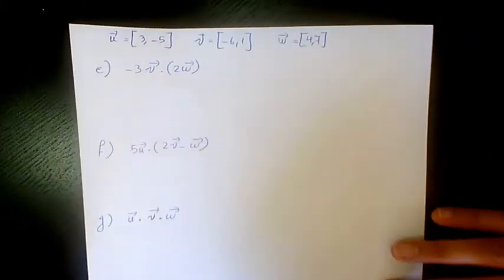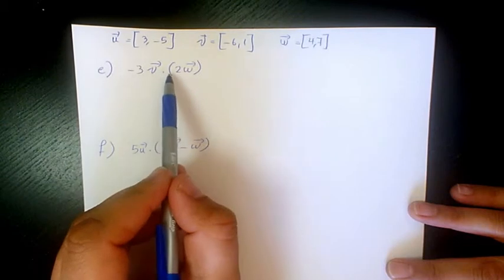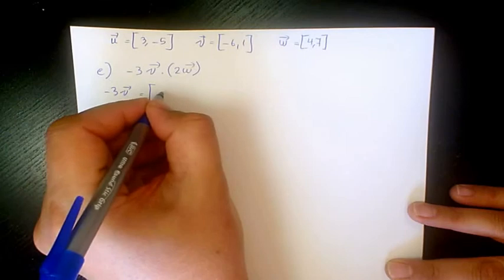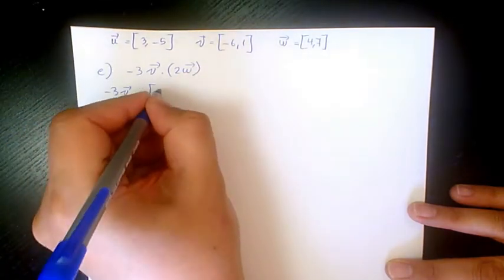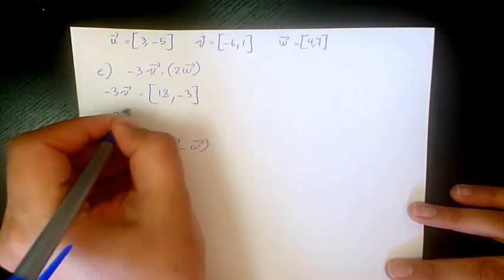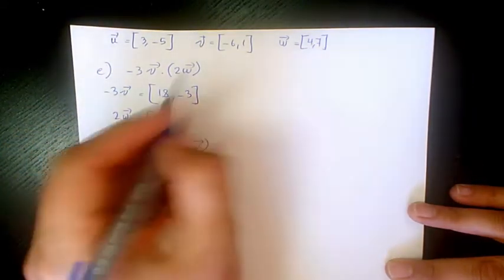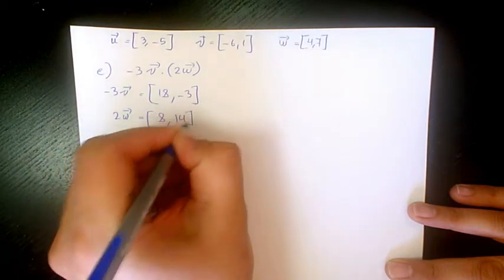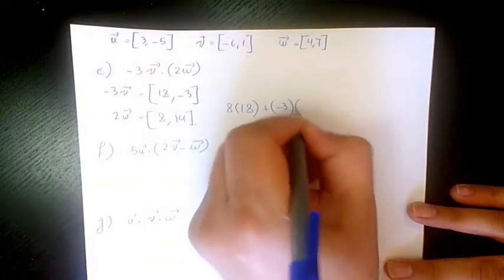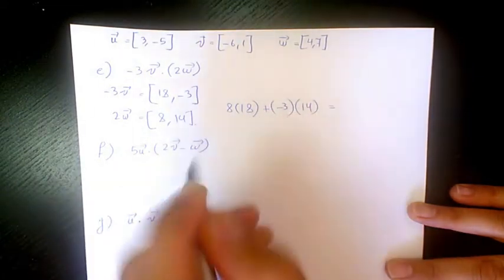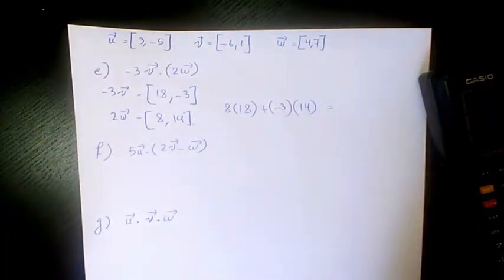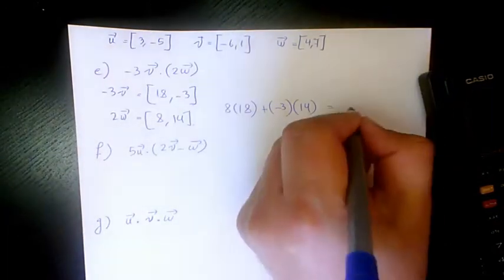Next, the dot product of -3v and 2w. -3v = (18, -3) and 2w = (8, 14). The dot product is 8 times 18 plus -3 times 14, which gives 144 minus 42 = 102.